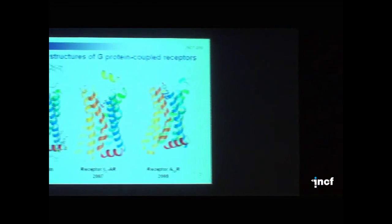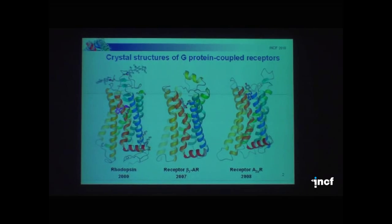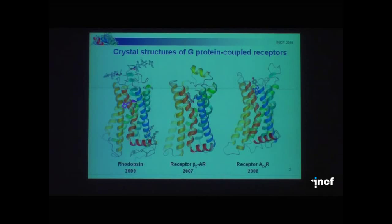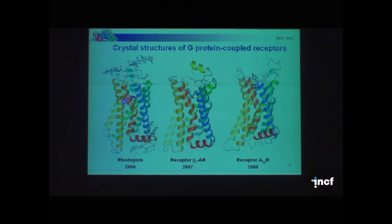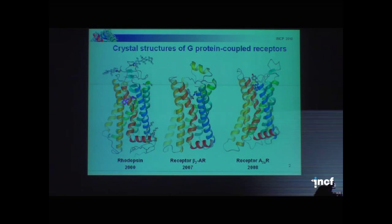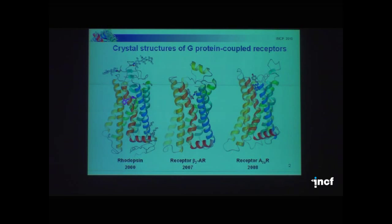So far we know only three structures of G protein-coupled receptors, although there are about 800 types of them. As Philip mentioned, about 50 percent of currently available drugs are known against them. The first structure was crystallized in 2000 by Chris Palczewski's laboratory, and then we had to wait seven years for the next structure. It was beta-1 and beta-2 adrenergic receptors, and in 2008 adenosine A2A receptor was crystallized. For this year, two new structures are scheduled: the dopamine receptor D3 and one of the chemokine receptors.